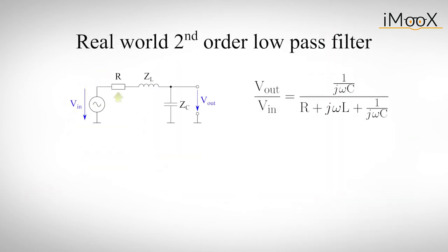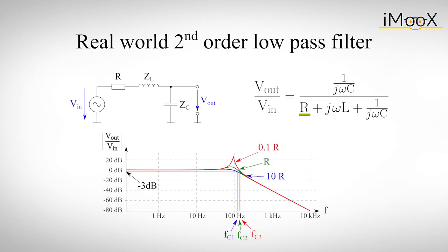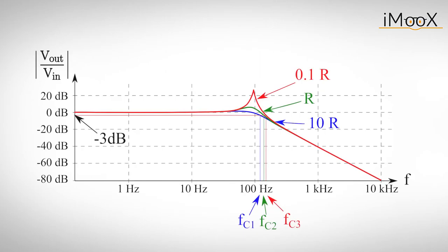With an additional resistor, our circuit becomes a little more realistic and our calculated behavior a little more complex. At least now it's clear that the amplification at the resonance frequency is always limited by our resistor. If we vary the value of R, we also see that we can influence the behavior of our filter. A change in R not only affects the amplification at the resonance frequency, but consequently changes the attenuation, which leads to different 3dB corner frequencies for different values of R.